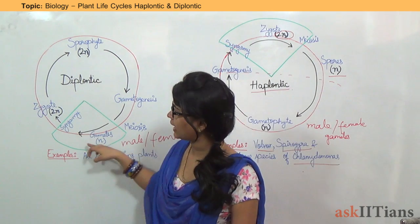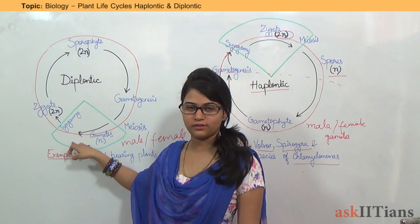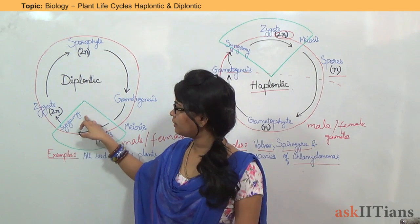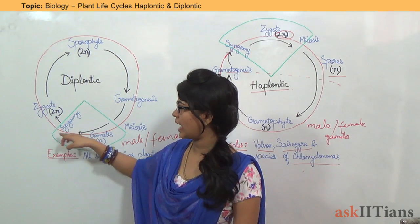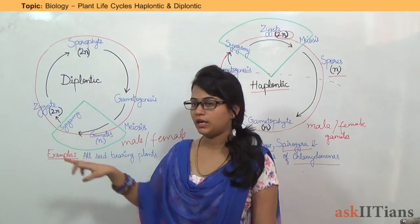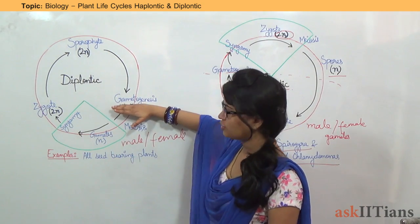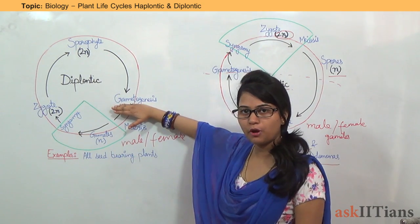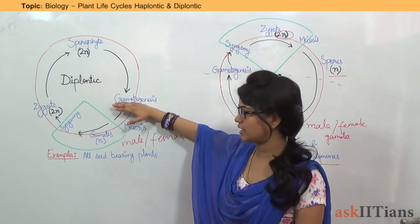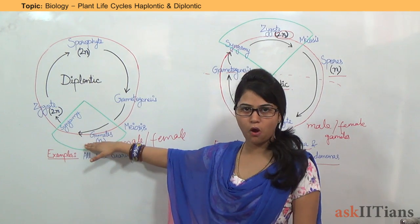These gametes will again fuse together through the process of syngamy to produce a zygote. Revising again: through the process of gametogenesis, gametes are formed.